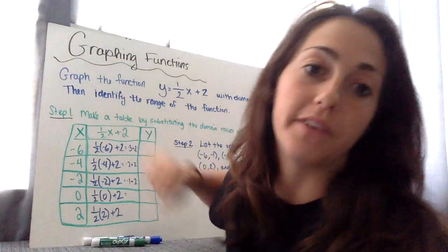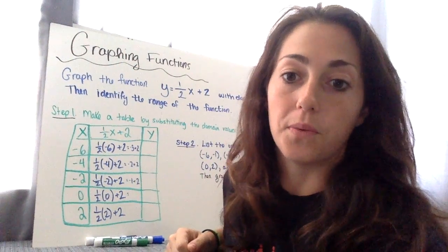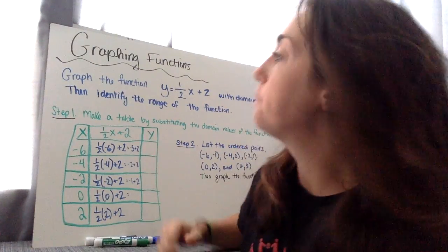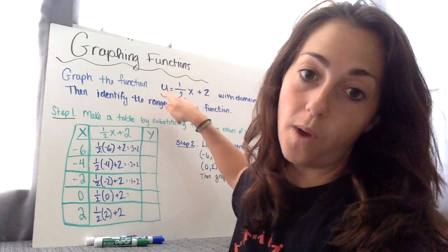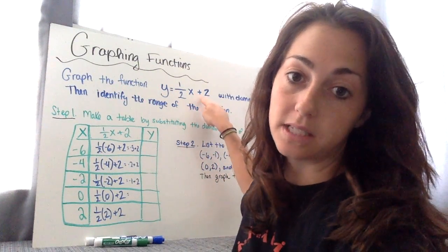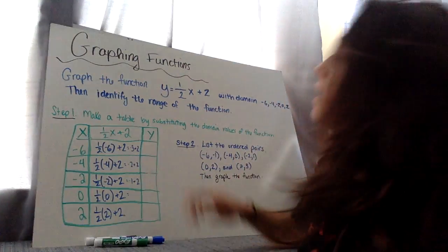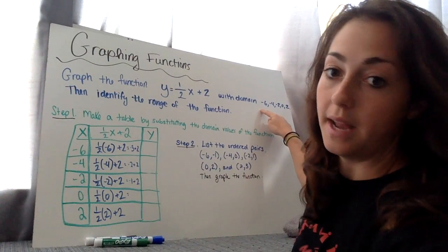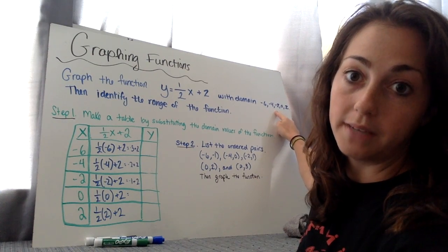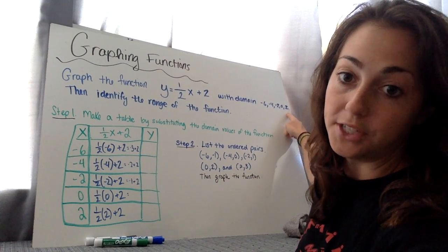Hello. Today we're going to talk about graphing functions. So right away, let's go right into an example. Graph the function y equals 1 half x plus 2 with domain negative 6, negative 4, negative 2, 0, and 2.